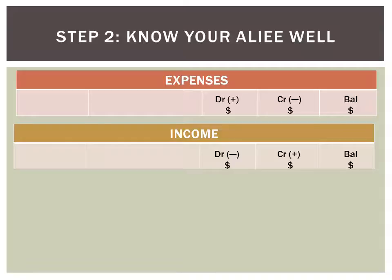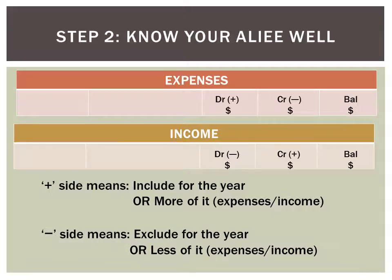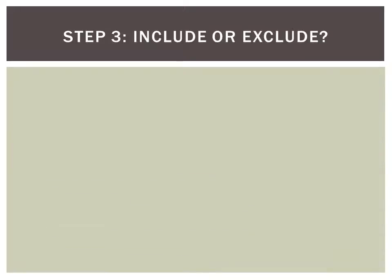What do the plus and minus mean? The plus side means you need to include for the year. So if expenses are for this year, you include them — or if you pay for expenses, you have more expenses paid. The minus side means you exclude for the year — if it is not for the year, take it out. This is the meaning of plus and minus.